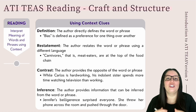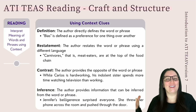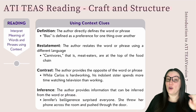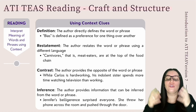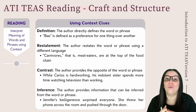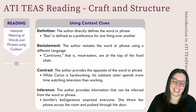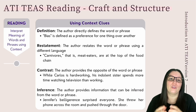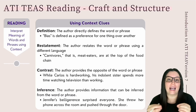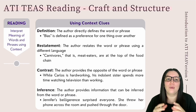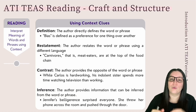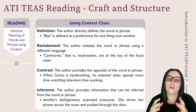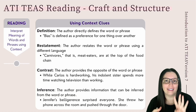Moving on to interpreting the meaning of words and phrases using context — specifically context clues. When you encounter an unfamiliar word, you can use the surrounding context to determine its meaning. Context clues are words or phrases that surround an unfamiliar word and provide information about its specific meaning. On the ATI TEAS, you'll come across four different types of context clues.